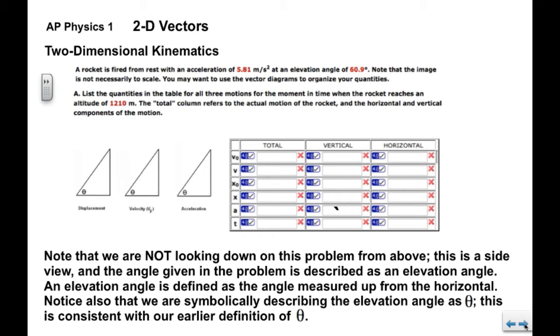Now, note first that we are not looking down on this problem from above. So this is a side view, the rocket starts here and it accelerates and moves to the right and up at this given angle. The angle given is described as an elevation angle. It's defined as measured up from the horizontal. It's consistent with our earlier definition of theta measured directly up from the x-axis.